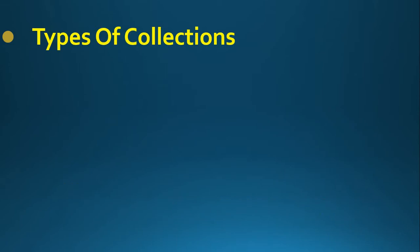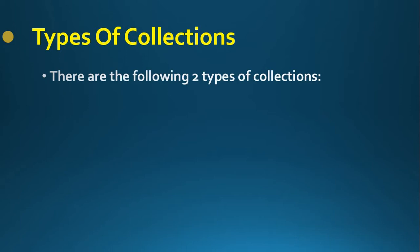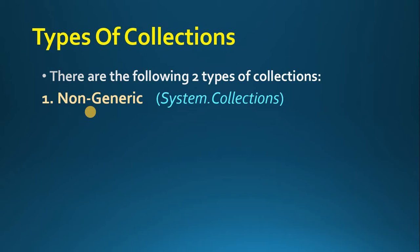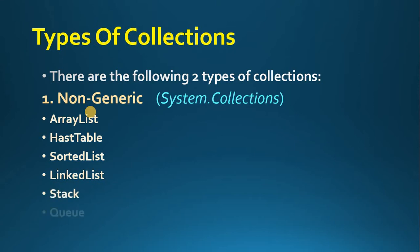Now, the types of collections. In C-Sharp, there are two types of collections: the first one is non-generic and the second one is generic collections. The non-generic collection is available in the System.Collections namespace. When we are working with non-generic collections, we use the System.Collections namespace. In this namespace, we have so many classes: ArrayList, HashTable, SortedList, LinkedList, Stack, and Queue.